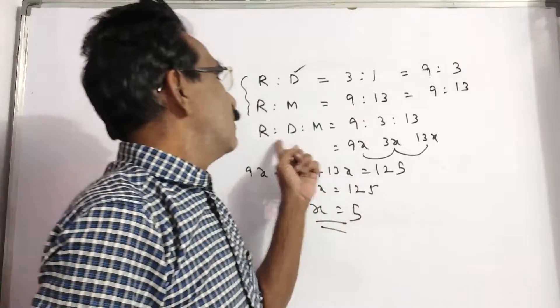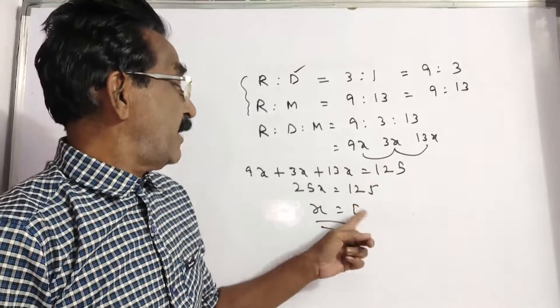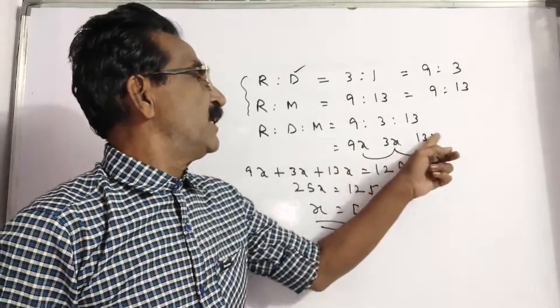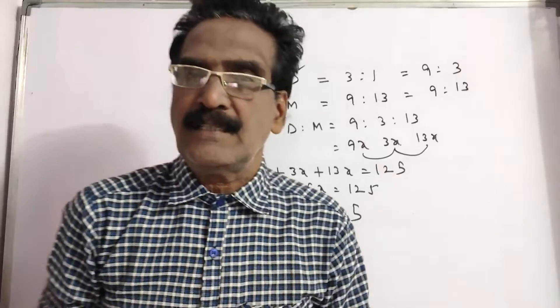So now Raman, nine times five is forty five, daughter three times five is fifteen, and mother thirteen times five is sixty five.